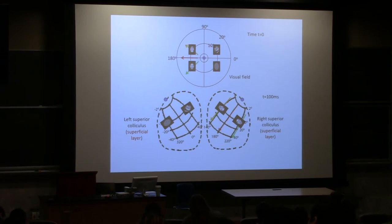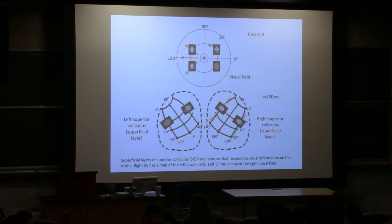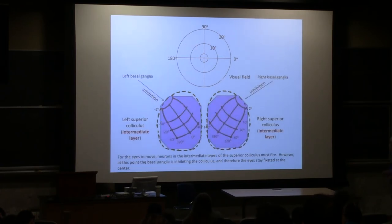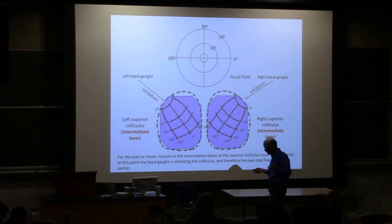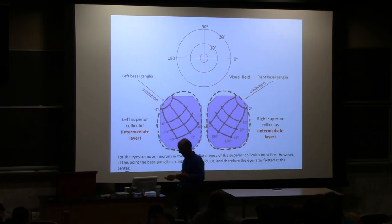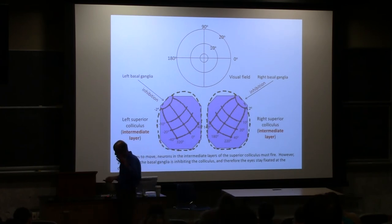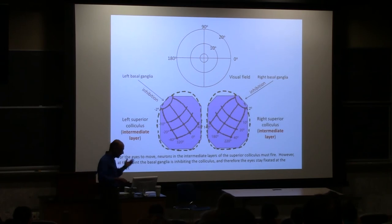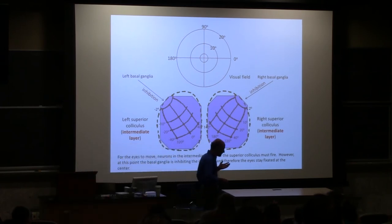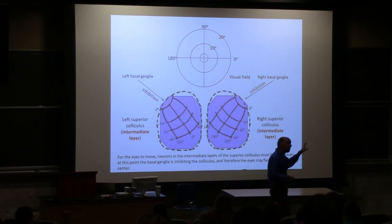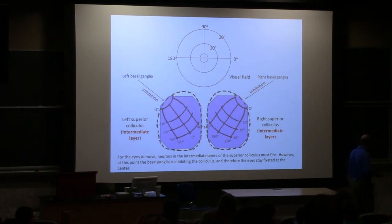The superficial layers of the colliculus have neurons that respond to visual information from the retina. The right colliculus has a map of the left visual field; the left colliculus has a map of the right visual field. But why, despite activity on the retina, does it still take another hundred milliseconds before a movement is made? Because the basal ganglia is inhibiting the colliculus — saying keep your eye focused on what you're looking at — until a brain structure like the parietal cortex decides it wants to move to something more interesting.